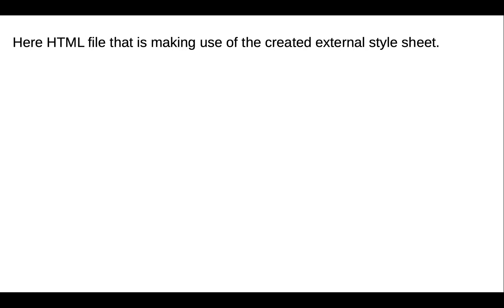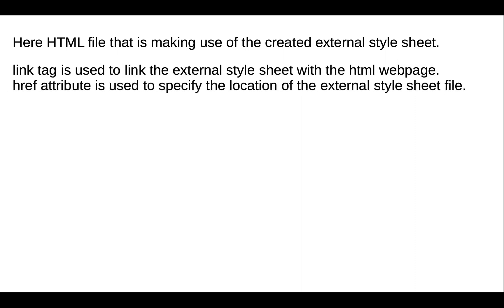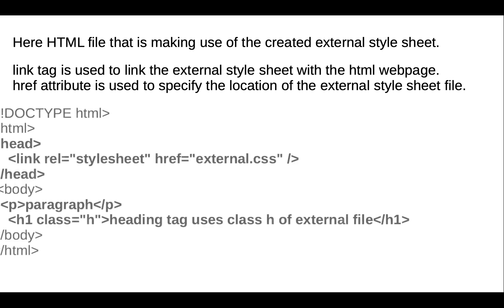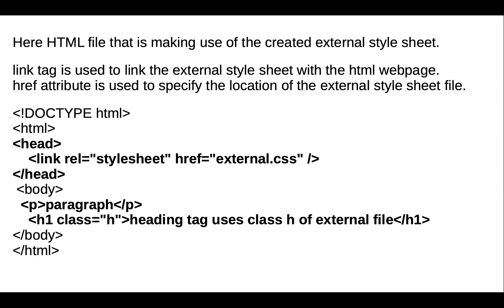We use a link tag to link the external stylesheet with the HTML file. The link tag is used in the head section. The href attribute is used to specify the location of the external stylesheet file. Each element style can be set only once and will be applied across web pages. In the body section we add all the selectors like class and so on.